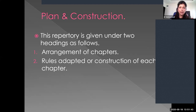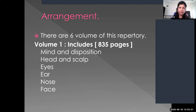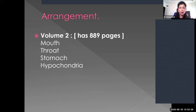Regarding the plan and construction, this repertory is given under two heads: first, arrangement of chapters, and second, rules adapted for construction of each chapter. Volume one has 835 pages and includes chapters on mind and disposition, head and skull, eyes, ear, nose, and face. Volume two contains about 889 pages and covers mouth, throat, stomach, and hypochondria.